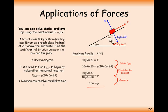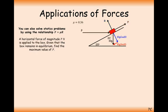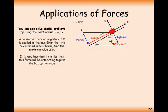The key point for this section: limiting equilibrium means the maximum value of friction takes effect, so you can balance forces in one direction against forces in the other. Given that the box remains in equilibrium, find the maximum value for P. We now have a force applied at an angle to the horizontal. We resolve our forces: we've got P sin 20 and P cos 20. It's very important to notice that the force will be attempting to push the box up the slope.